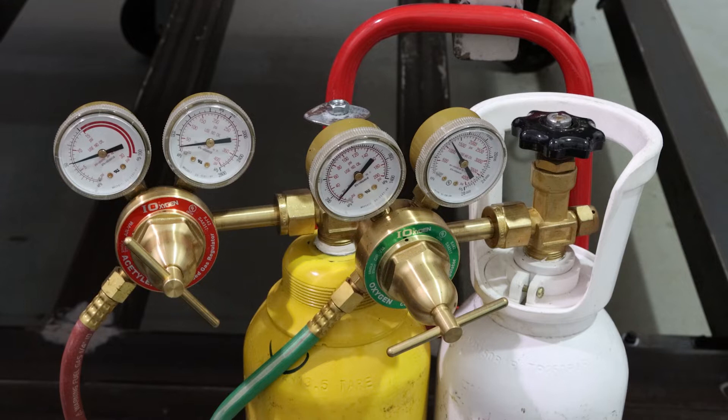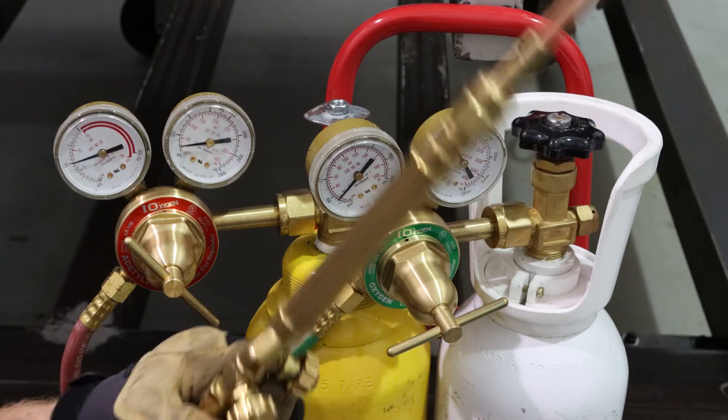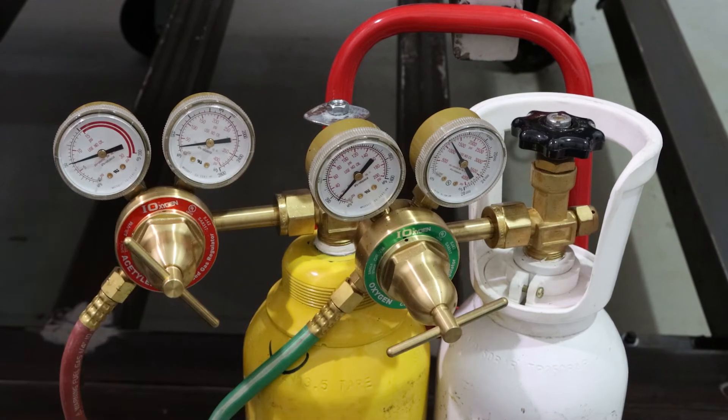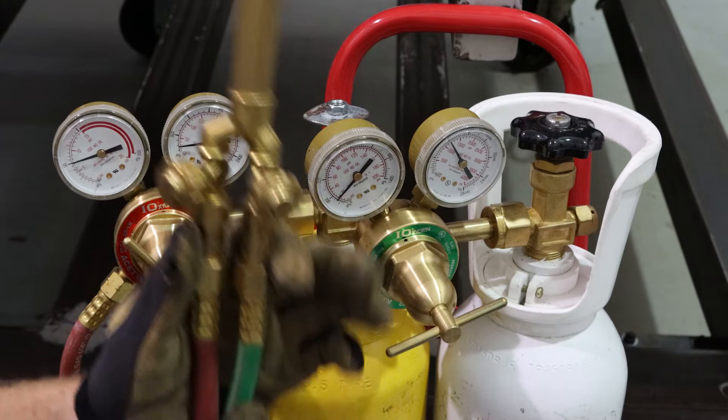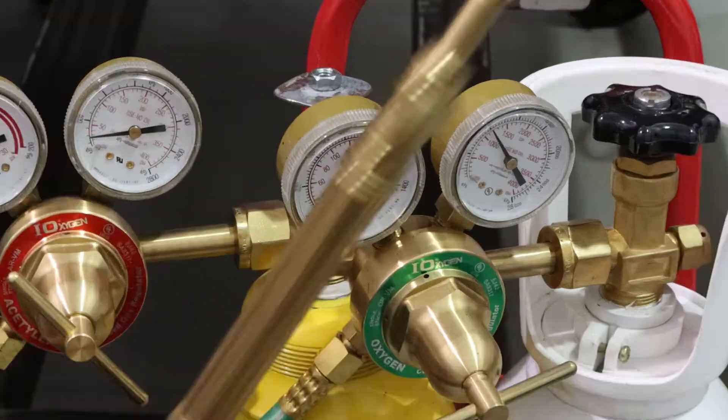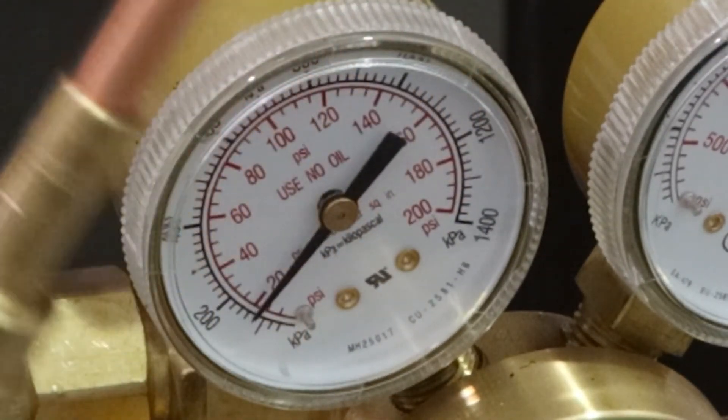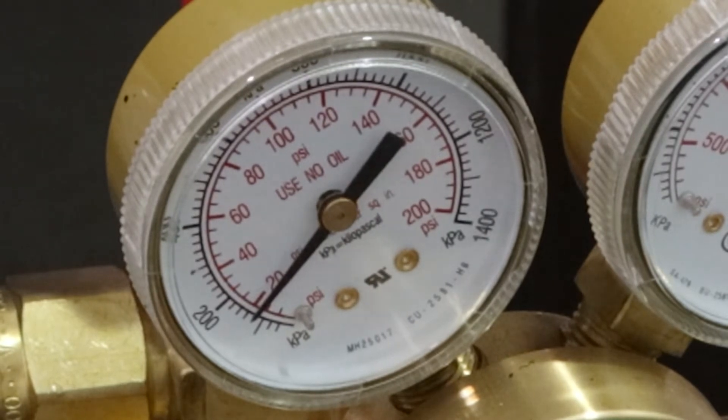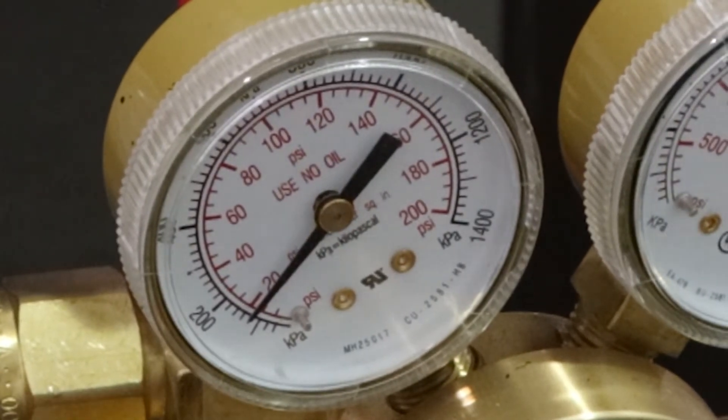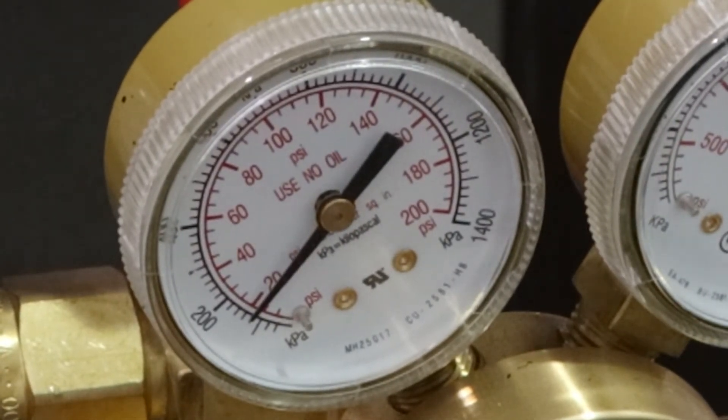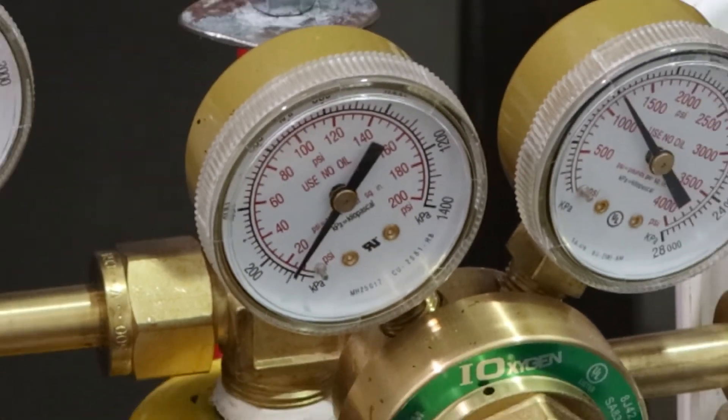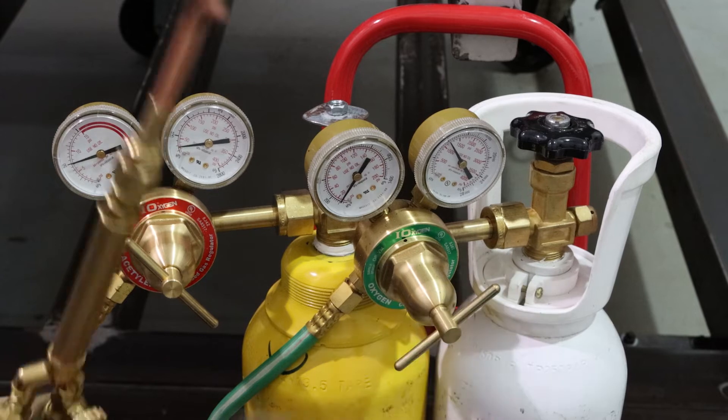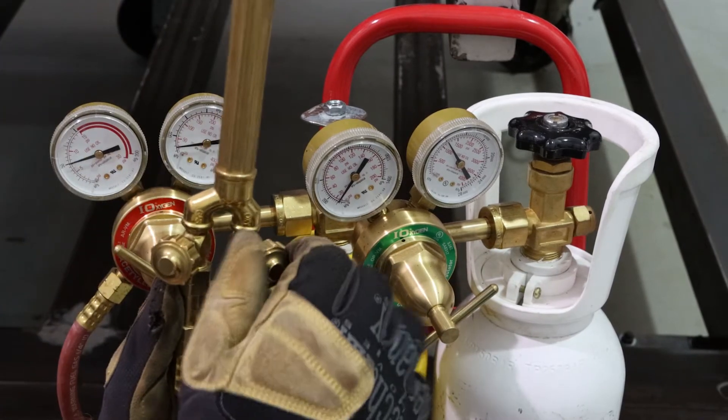There we go. And now what we need to do is balance the flow of these gases so that as they come through the torch, they're going to be at the right pressure. So to do that, we're going to open up the oxygen line, which is the green one. And we're going to see that that pressure has dropped slightly, but we're going to regulate that down to about 10 bar. Just like that. And then we're going to close that off again on the torch.